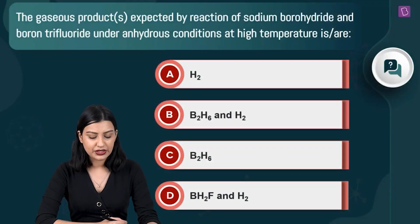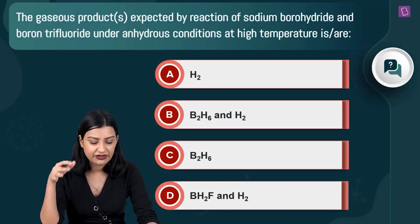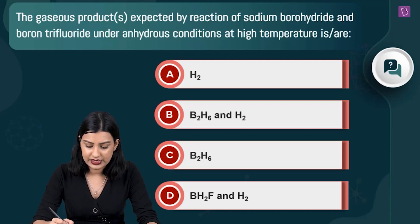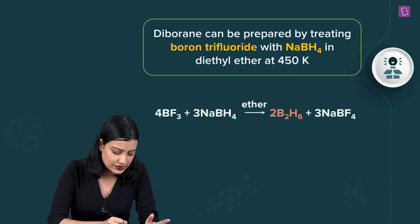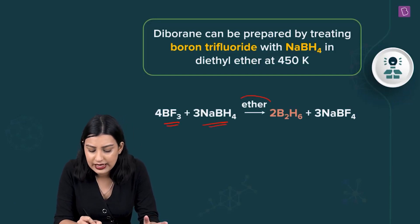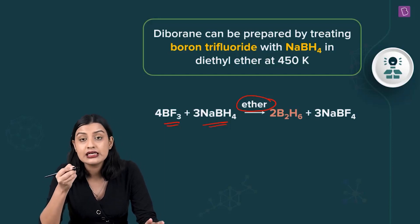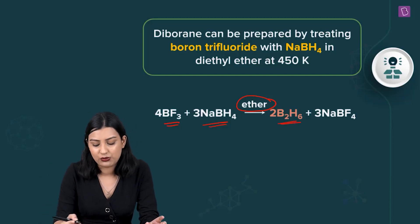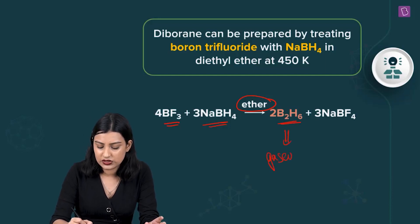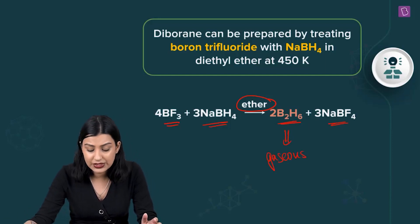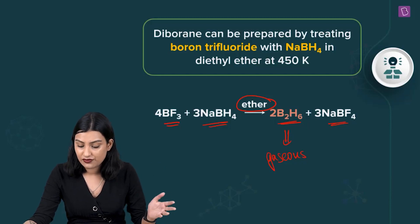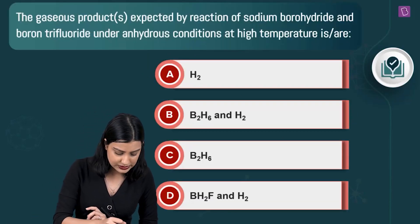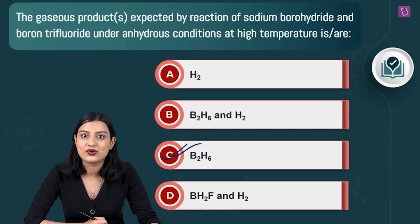Here they're asking about the gaseous products of the reaction of sodium borohydride and boron trifluoride under anhydrous conditions at high temperature. This is the preparation of diborane. Boron trifluoride and sodium borohydride react in the presence of ether — an organic solvent is needed because water would cause hydrolysis. The gaseous product is diborane, B₂H₆, along with NaBF₄. At high temperature (around 450 Kelvin), B₂H₆ is formed, so option C is correct.